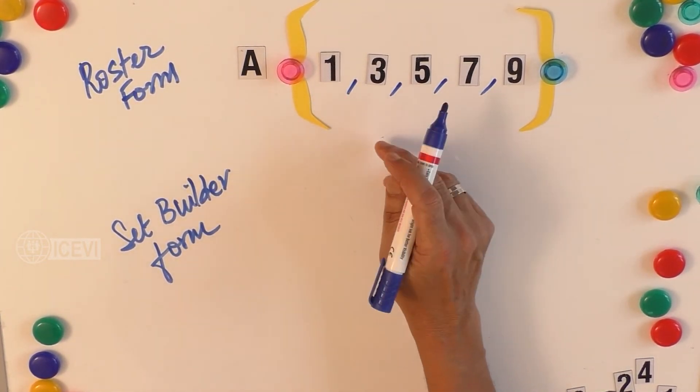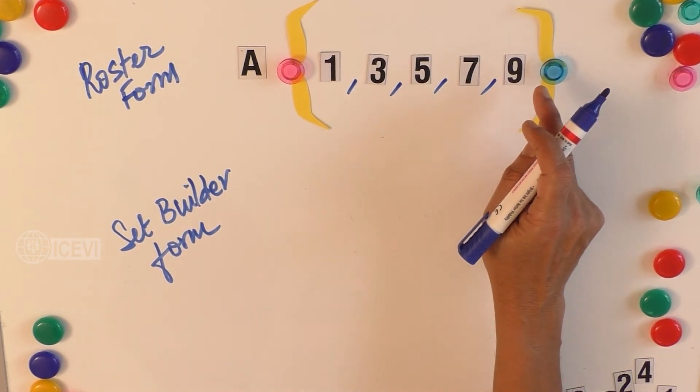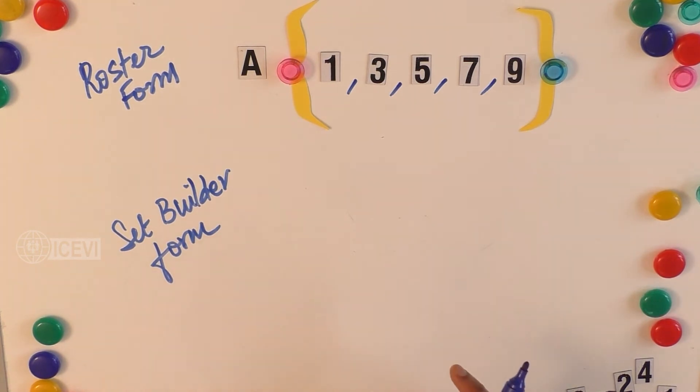all the elements are presented like this and then you put a comma in between: 1, 3, 5, 7, and 9, and then you close with the curly parenthesis.